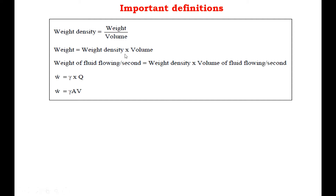If you divide it by seconds on both sides, you get the weight of fluid flowing per unit time. So you get w-dot is equal to gamma into A into V.